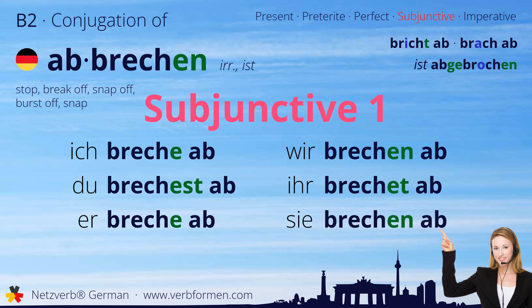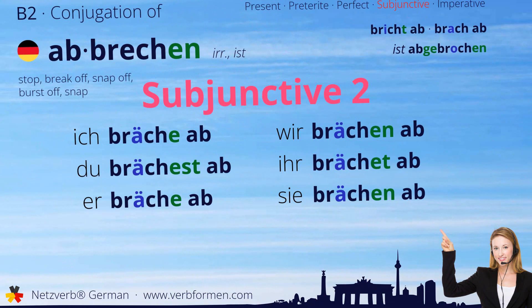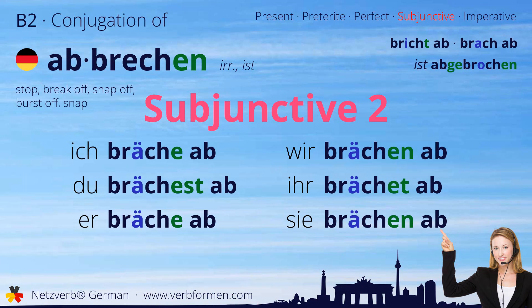Now we move on to the subjunctive two: ich breche ab, du brachst ab, er breche ab, wir brechen ab, ihr brechet ab, sie brechen ab.